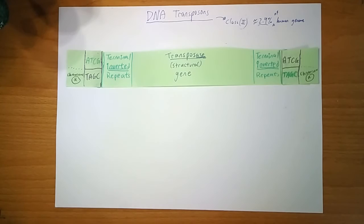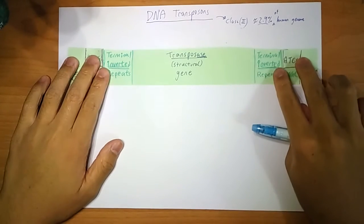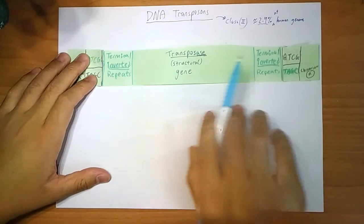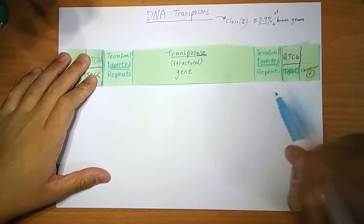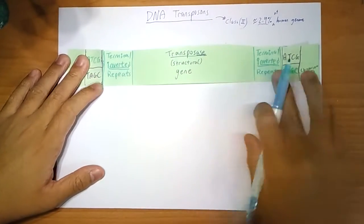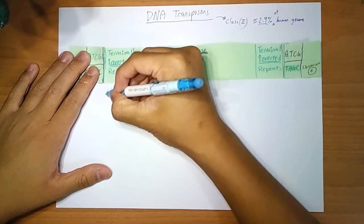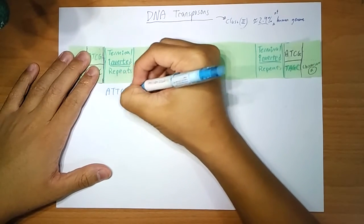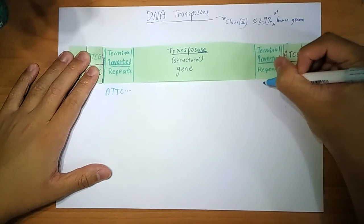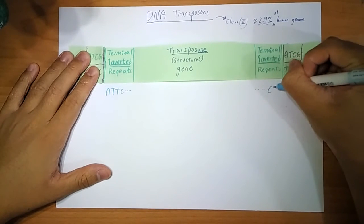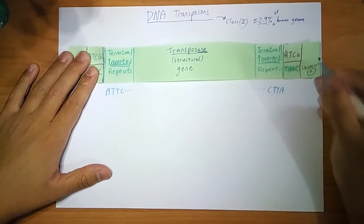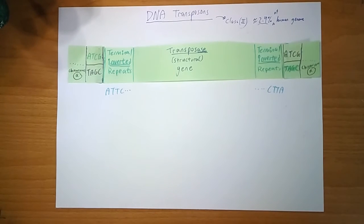Now, let's look at the structure of it. At the end, we have terminal inverted repeat. Terminal because at the end, inverted because, well, they are inverted. That means if you have A, T, T, C here, you start with A, T, T, C, you end with C, T, T, A, of course, on the same strand. So that is what it means by inverted.